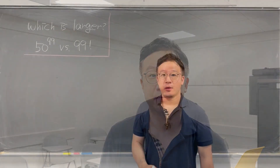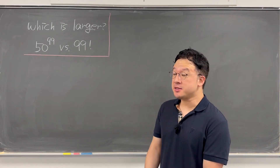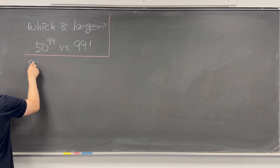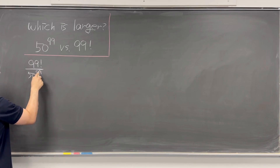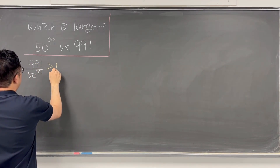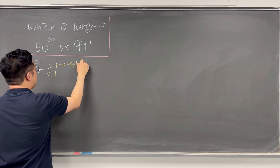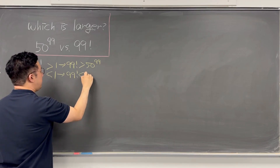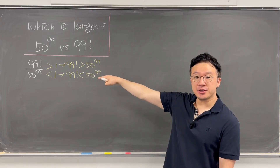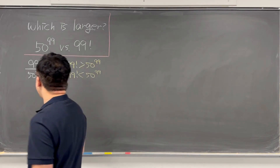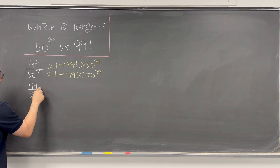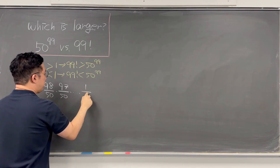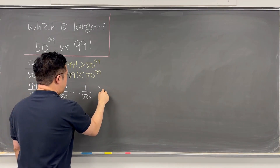The third method is to use the log. I'll be making a fraction again, but this time putting 99 factorial in the numerator and 50 to the power of 99 in the denominator. We still need to see whether this fraction is greater than 1 or less than 1. We can rewrite 99 factorial over 50^99 as (99/50) × (98/50) × (97/50) × ... × (1/50).